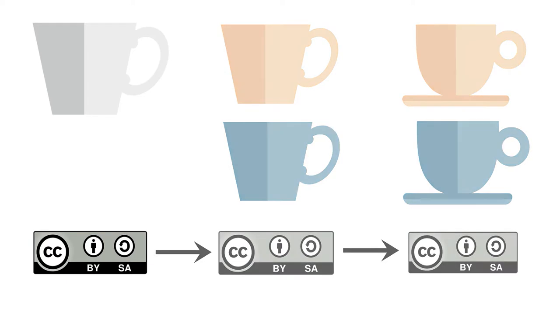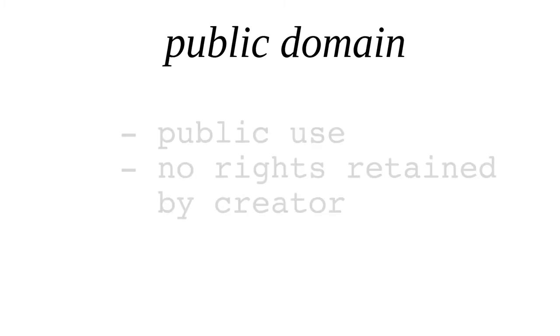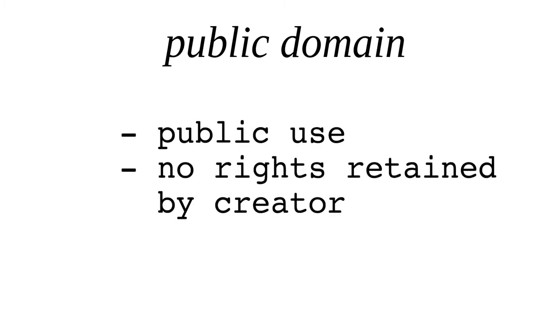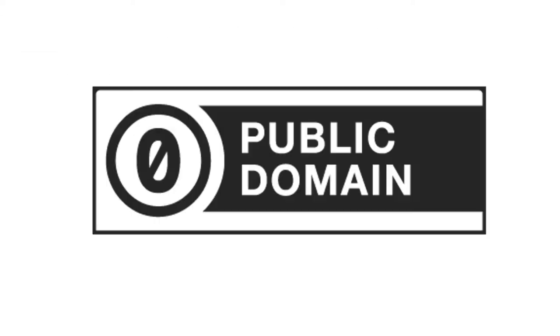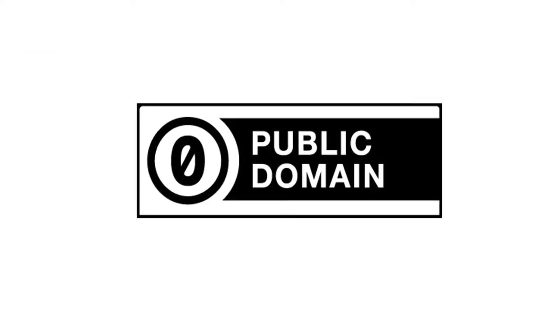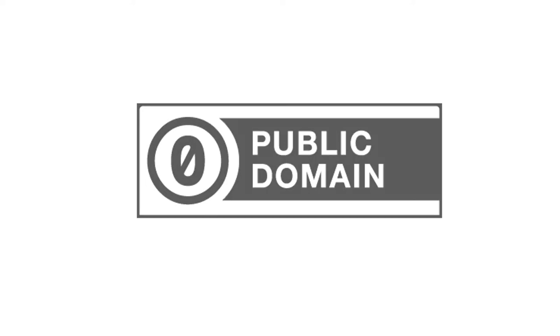Open data is often also released in the public domain. Data released in the public domain is released for public use without any intellectual property rights retained by the creator. A public domain designation indicates that the data can be reused without restriction. Even so, it is still important to cite the original source of the data so that your audience can evaluate the data for themselves.